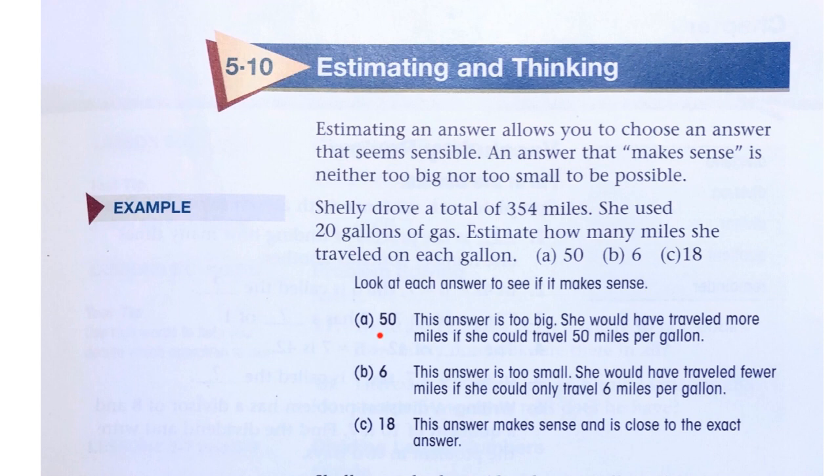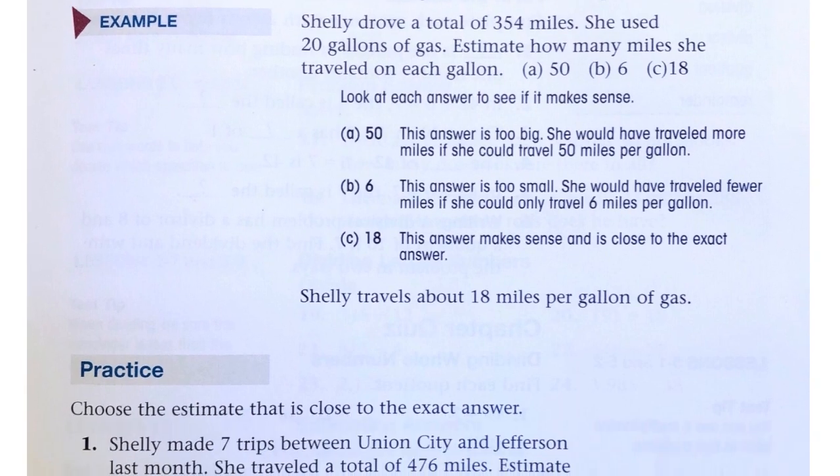Well, A is 50. This is going to be too big. She would have traveled more miles if she could travel 50 miles per gallon. She would have traveled fewer miles if she could only travel 6 miles per gallon.